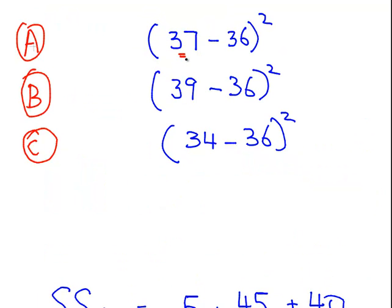So let's just have a quick example of what I mean. So here is the group mean for A, 37, and the overall mean here is 36. The group mean for B is 39 and the overall mean is again 36. Likewise, the group mean for C is 34 and the overall mean is 36. So we subtract the overall mean from each of the group means and we square it.